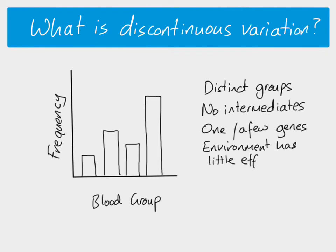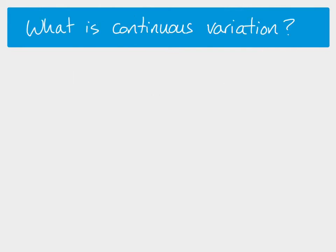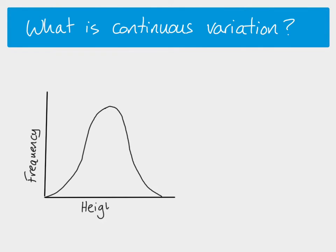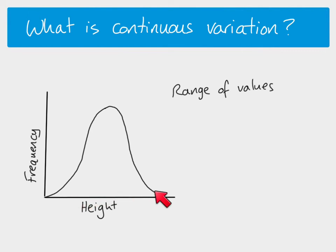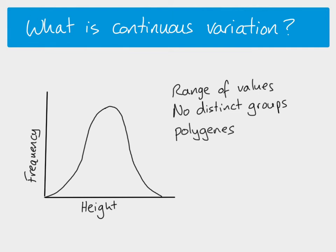With discontinuous variation, the genes cause the variation and the environment has no effect on it. Continuous variation, by contrast, produces a bell-shaped curve when frequencies are graphed. Height is a good example — most people are around the average height, with few people at the extremes. Importantly, there is a range of values with no distinct groups; height can be anywhere along the continuum.